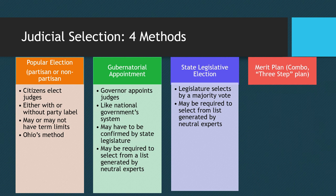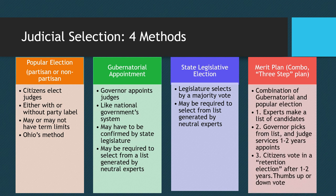Finally, there's the merit plan, also called the combination plan or three-step plan. It tries to combine gubernatorial and popular election. A list of candidates is given to the governor by a neutral expert, the governor picks from the list and that judge serves a short period of time. After that, the citizens vote in what's called a retention election, where they can decide to keep the judge or remove the judge.